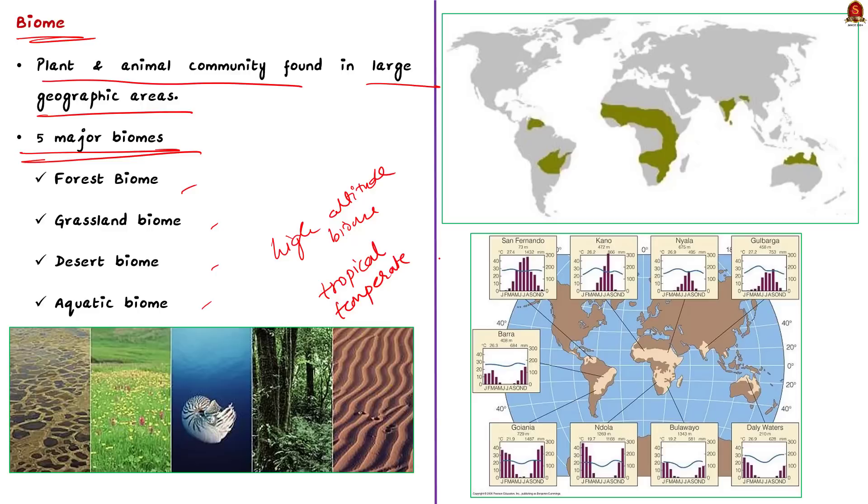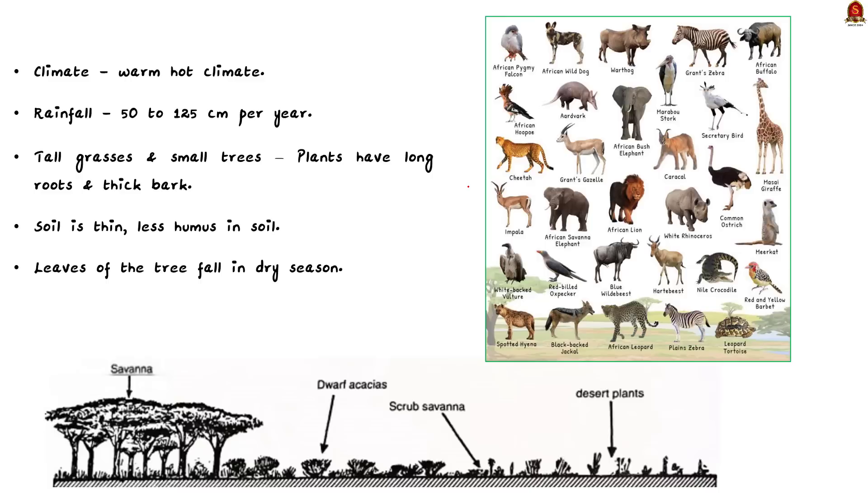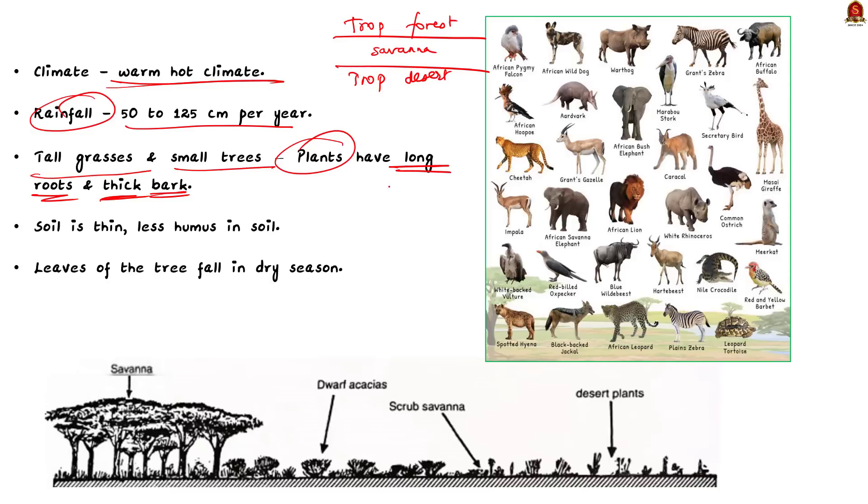Now, imagine a place that sits right between a tropical forest and a tropical desert. That's where you will find the savannah biome. The weather in the savannah biome is mostly warm and hot throughout the year. It's not as dry as a desert, but it is not as wet as a forest either. In the savannah, we get a moderate amount of rainfall ranging from 50 to 125 centimeters per year. It's not as much as a rainforest, but it's enough to support some plant's life. Speaking of plants, the savannah is mostly covered with tall grasses and in some areas, you might find a few small trees scattered around. Now, here's something interesting about the plants in the savannahs. They have long roots and thick bark. Can you guess why? These features help them to protect them from forest fire. This is because the deep roots remain unharmed during the fires. These roots with all their starch reserves will be ready to send up new growth when the soil becomes moist again.